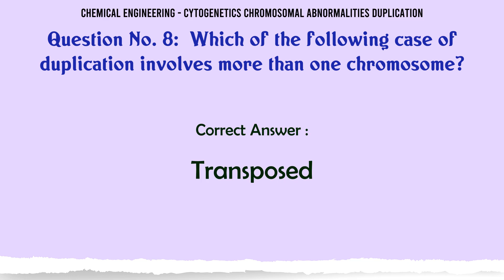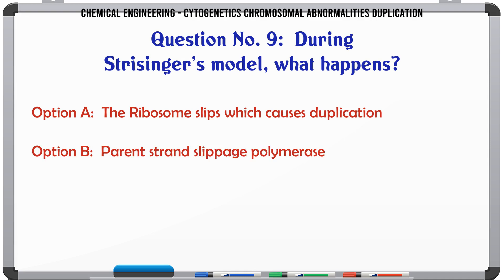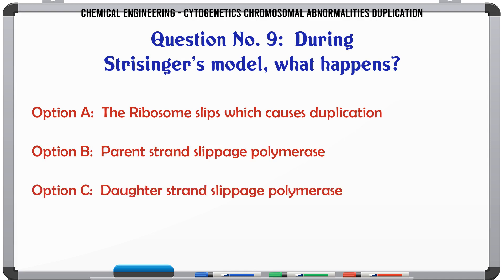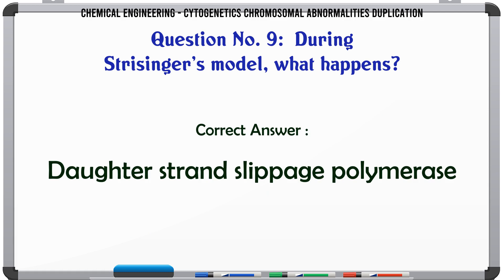During the Streisinger model, what happens? A: the ribosome slips which causes duplication. B: parent strand slippage by polymerase. C: daughter strand slippage by polymerase. D: the polymerase backtracks and resynthesizes. The correct answer is daughter strand slippage by polymerase.